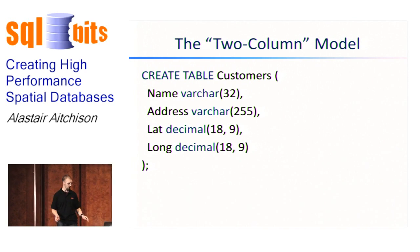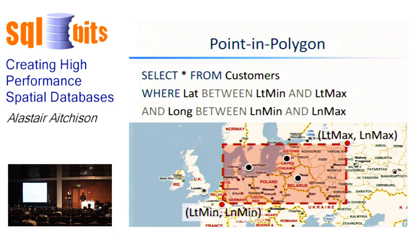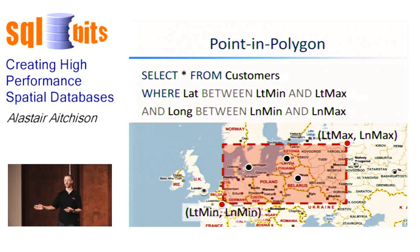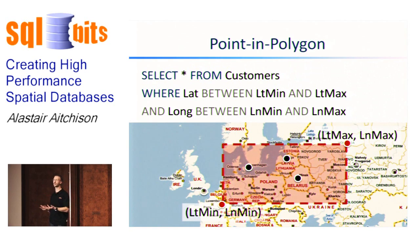Using this model, it's possible to answer questions like which of our customers are located in a certain area of space. The query on this slide does that: SELECT * FROM customers WHERE lat BETWEEN lat_min AND lat_max AND long BETWEEN long_min AND long_max. This represents the red rectangle area on the map — the minimum latitude and longitude is at the bottom-left corner and the top-right is the maximum of both values. The biggest limitation is that it really only works for rectangular areas of space. If you wanted to find customers within a county boundary or a complex polygon, you can't really do that using this approach.